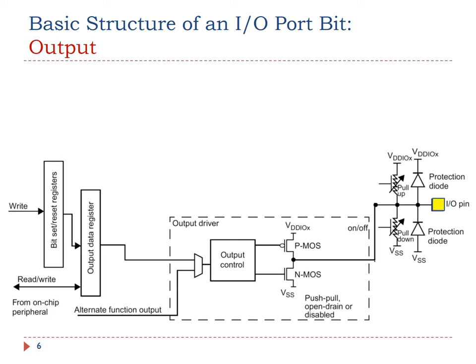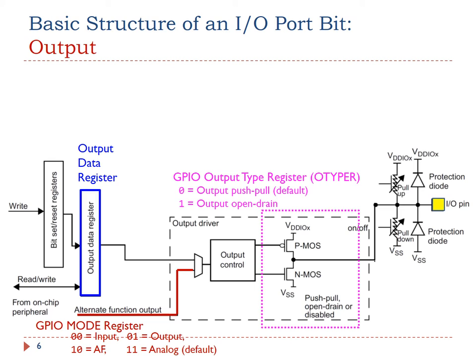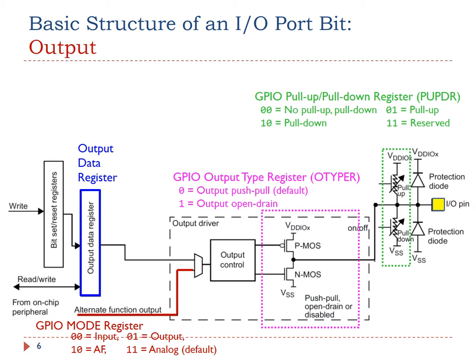Let's quickly review GPIO output. There are four important registers related to output, including the output data register, the output type register, and the pull-up pull-down register. We can use the mode register to configure the function of the pin. If the pin is used as GPIO output, the mode bits should be 01. If the pin is used as GPIO input, the mode bits should be 00.